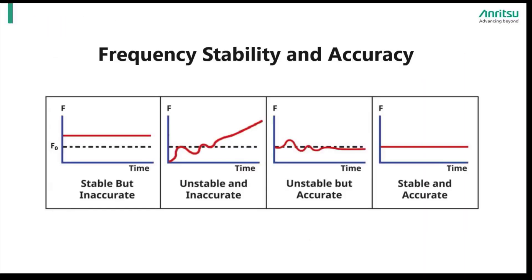Let's start. The best way to start with frequency stability and accuracy is by defining what we mean for signal generators. We find the best way to illustrate what frequency stability and accuracy are is through the use of visual representations. Below we have four plots that will help us understand the differences between combinations of stability and accuracy.